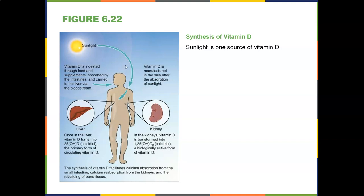The darker your skin, the less vitamin D you absorb from sunlight, so dietary intake becomes more important. Fair-skinned individuals absorb more from sun but face increased skin cancer risk. Get your vitamin D levels checked regularly — it acts like a hormone. Proper liver and kidney function is essential, and adequate vitamin D facilitates calcium absorption.